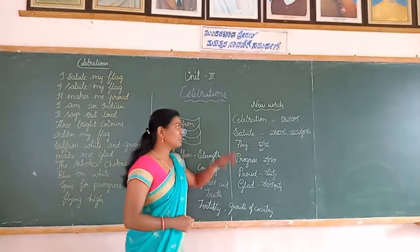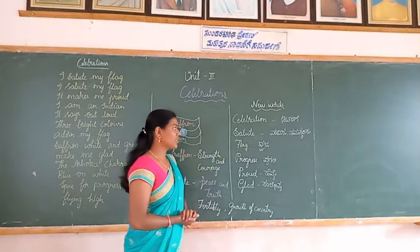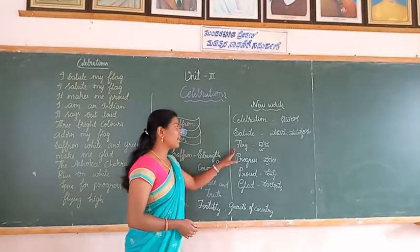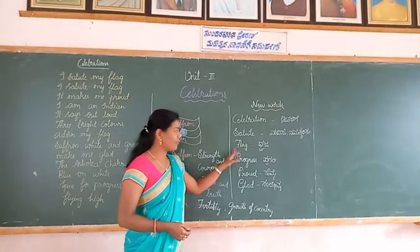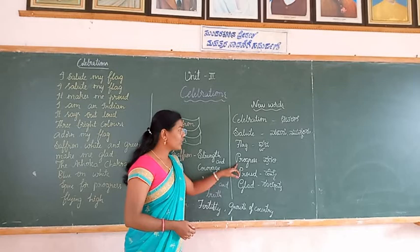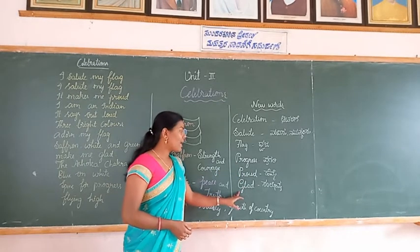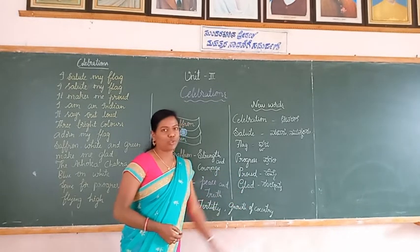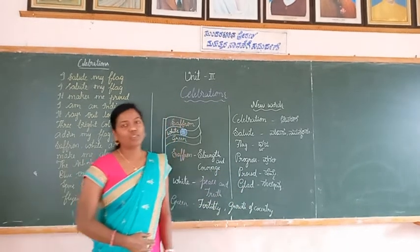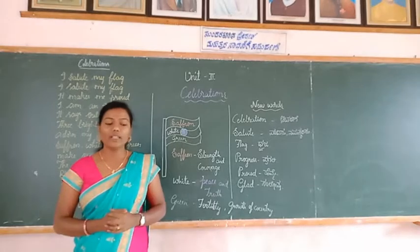Salute means vandisu or namaskarisu. Flag means bachcha. Progress means pragati. Proud means hemme. Glad means sanitosha. So dear students, let us now look at the context of these words.